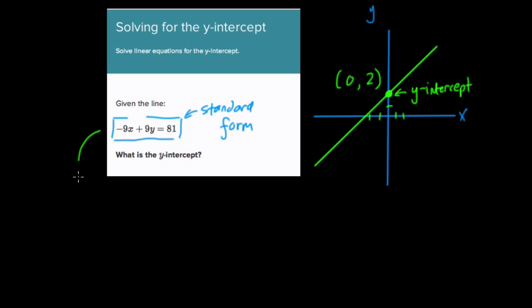When you're given an equation in standard form, we just plug in x equals zero to solve for the y-intercept. And here, we can quickly solve. Negative 9 times 0, well, x is zero at the y-intercept. So we have 9y equals 81, divide both sides by 9, and the y-intercept is just 9. And the point you would enter, if they ask for a point, is 0, 9. That's our y-intercept.